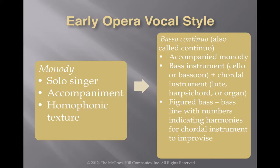We have several musical styles to discuss in this chapter, the first one being monody. This is one of the first examples of homophonic texture in Western music culture. Monody involved a solo singer and an accompaniment, which is the most basic form of homophonic texture.